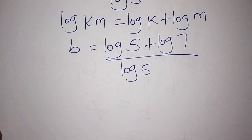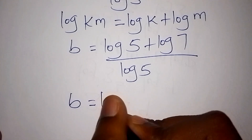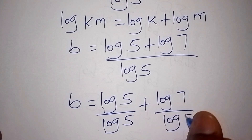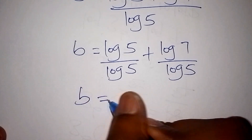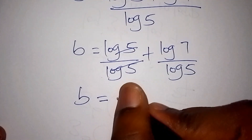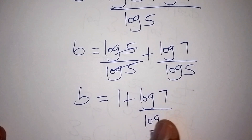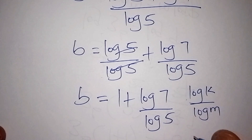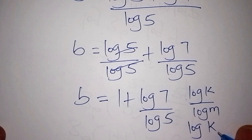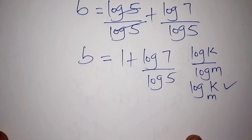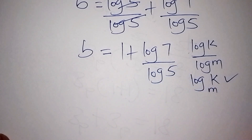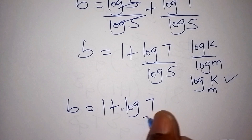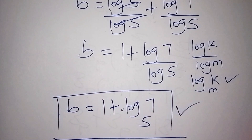Now we divide both sides by the log of 5. So b is equals to log of 5 over log of 5, plus log of 7 over log of 5. Log 5 and log 5 cancel each other, so b is equals to 1 plus log of 7 all over log of 5. Since log of k over log of m can be written as the log of k to the base of m, our final answer is b equals 1 plus log of 7 to the base of 5. This is our correct answer.